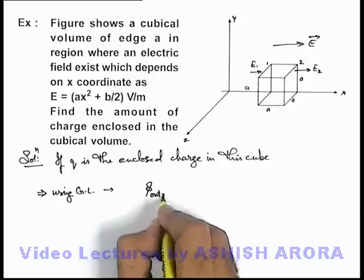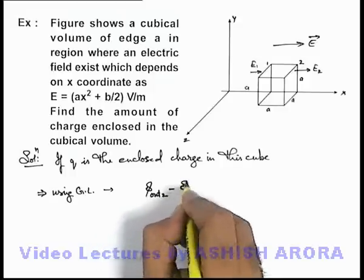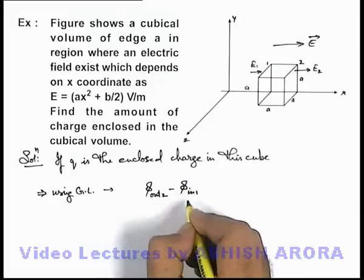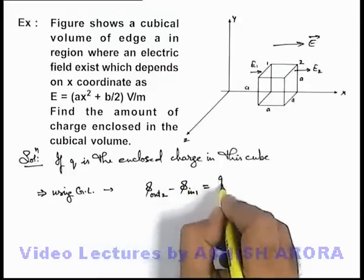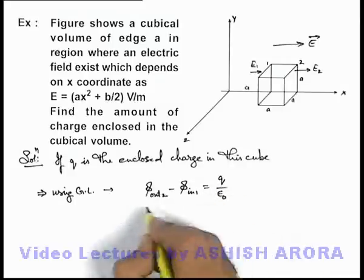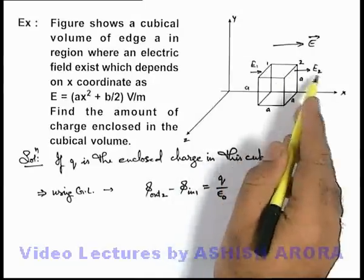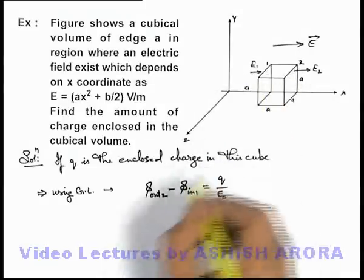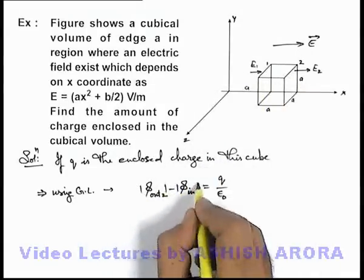We can write that phi coming out from face 2 minus phi going in at face 1 is equal to the net charge enclosed by epsilon not. This is Gauss's law: net flux coming out minus flux going in. Here we are talking about the magnitude of these electric fluxes.